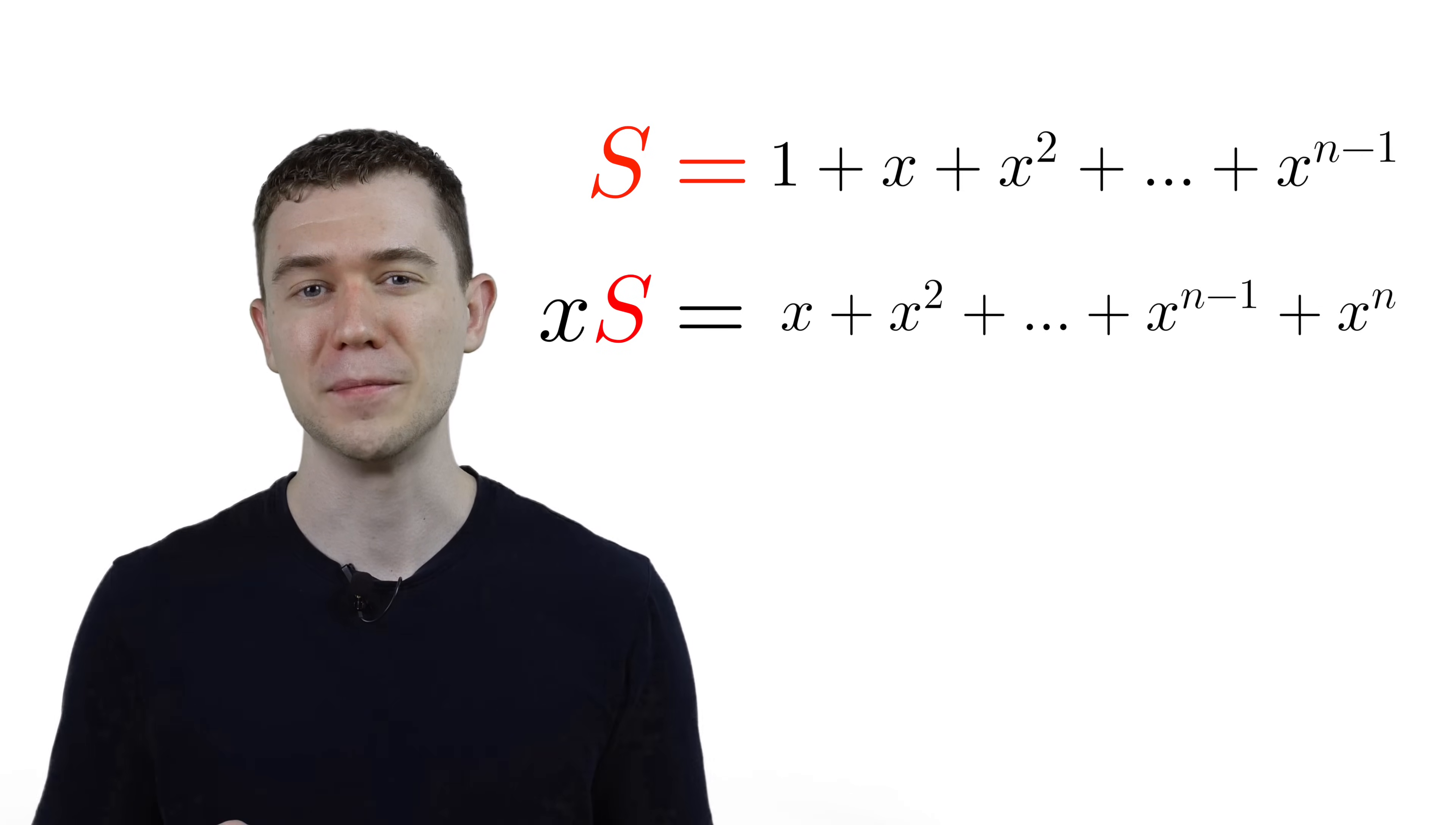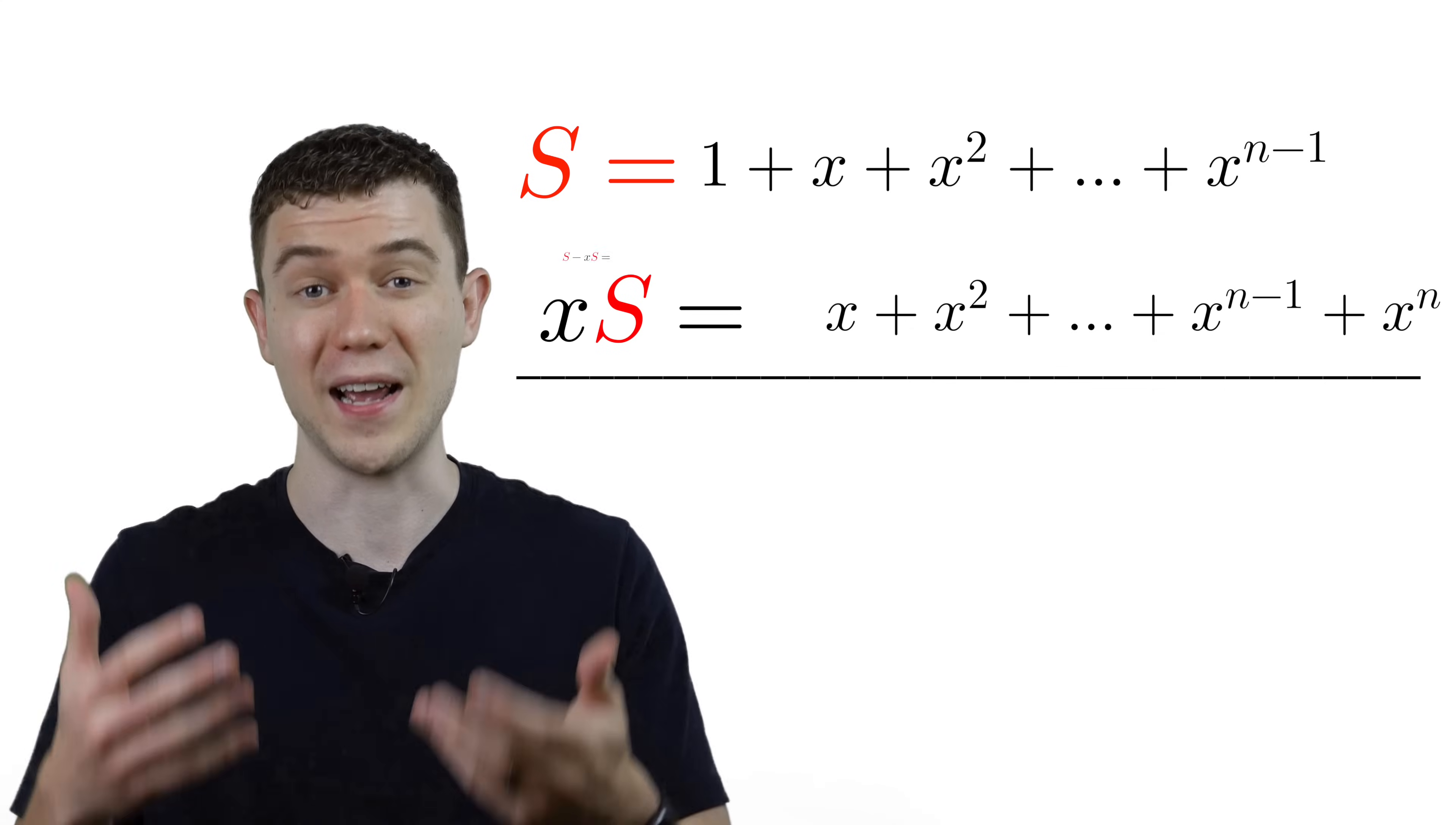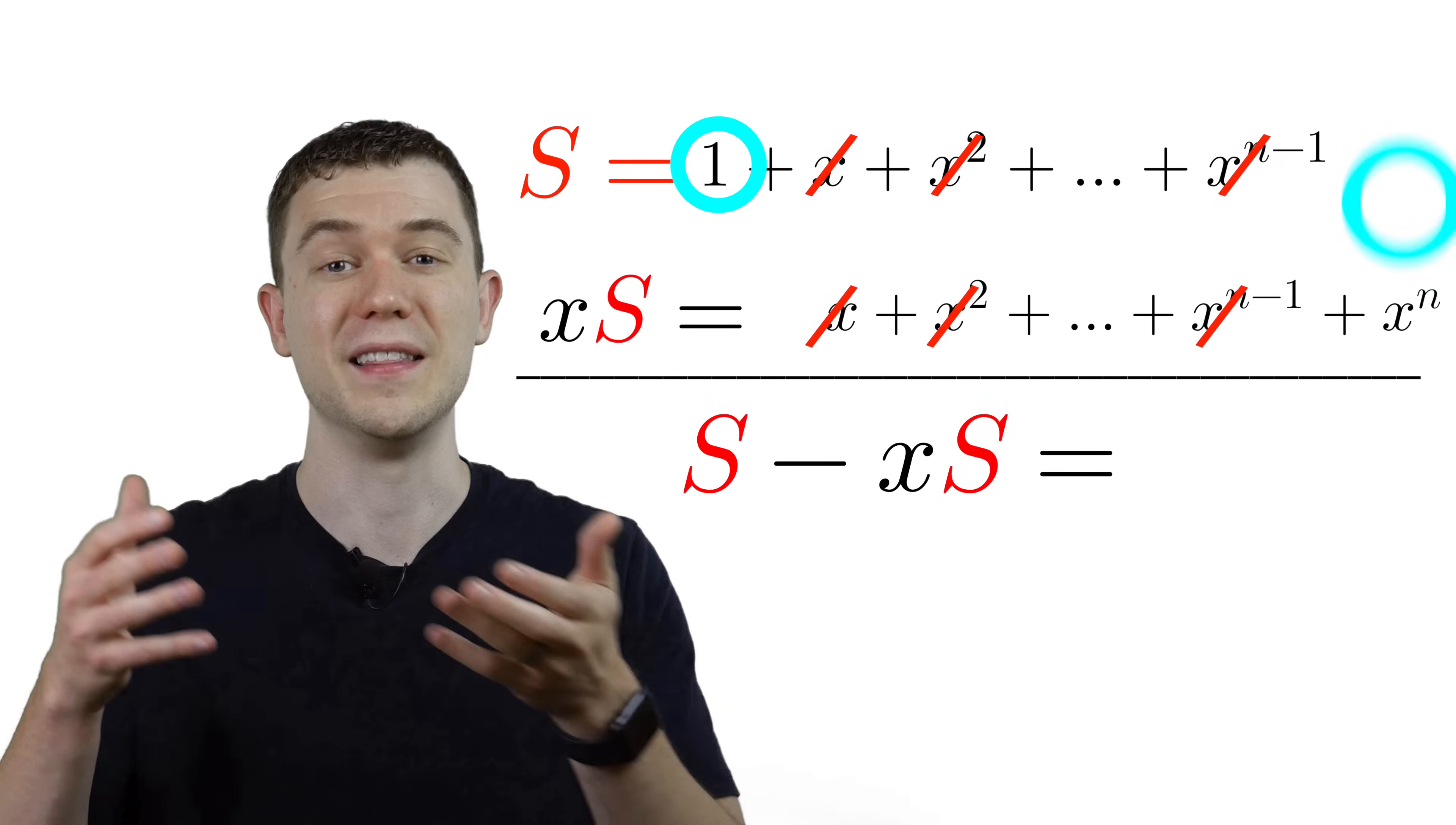Here's a nice little trick that happens sometimes. Shift all of these terms over by 1, and then subtract these two sums. On the left, we'll get s minus xs, and on the right, all of those middle terms cancel out. We're just left with the 1 and the last term.